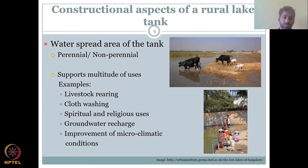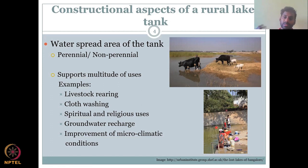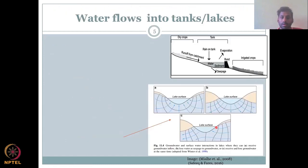Tanks are also used for spiritual and religious purposes — most tanks have a temple where festivities occur using the tank water. They support groundwater recharge indirectly through ponding, and they improve microclimatic conditions. The evaporation from tanks creates a cooler local temperature — a microclimate suited for livestock rearing and certain crops.